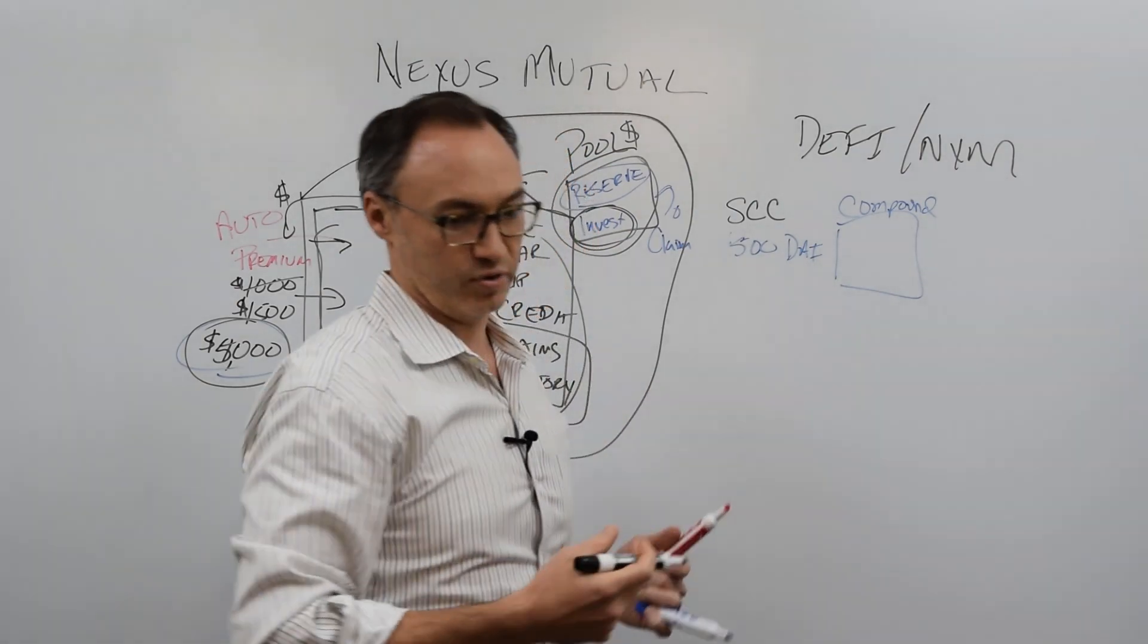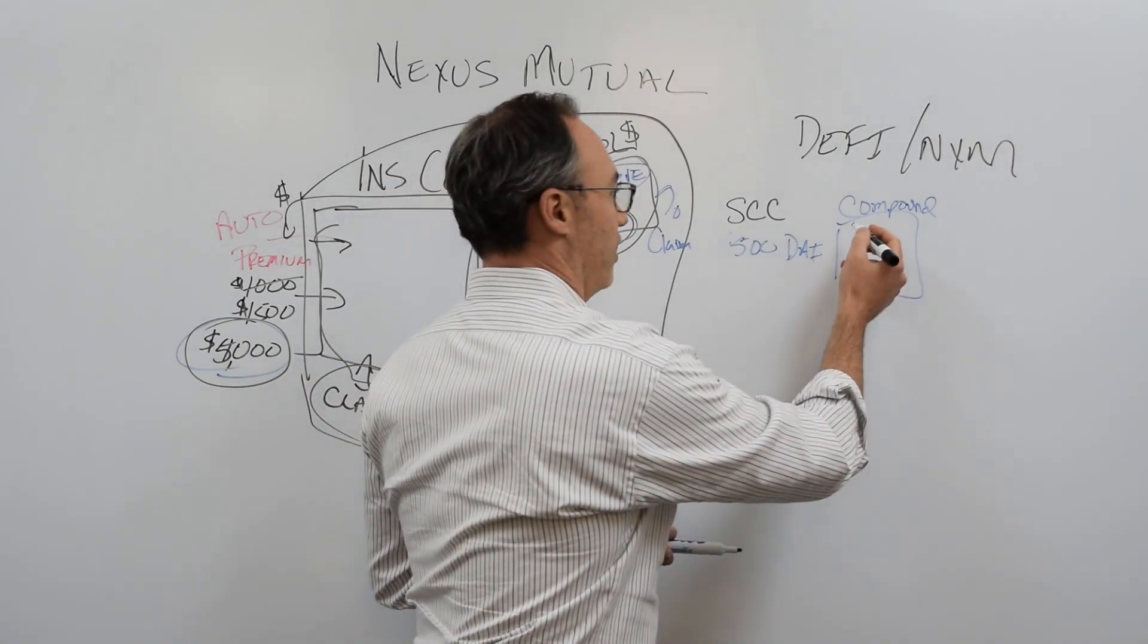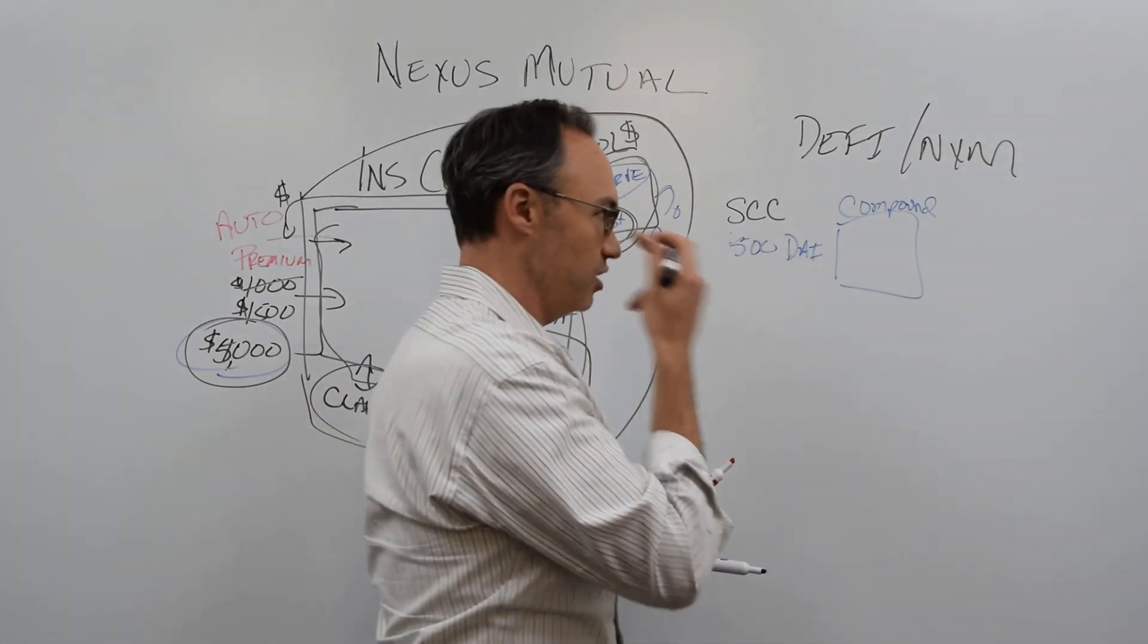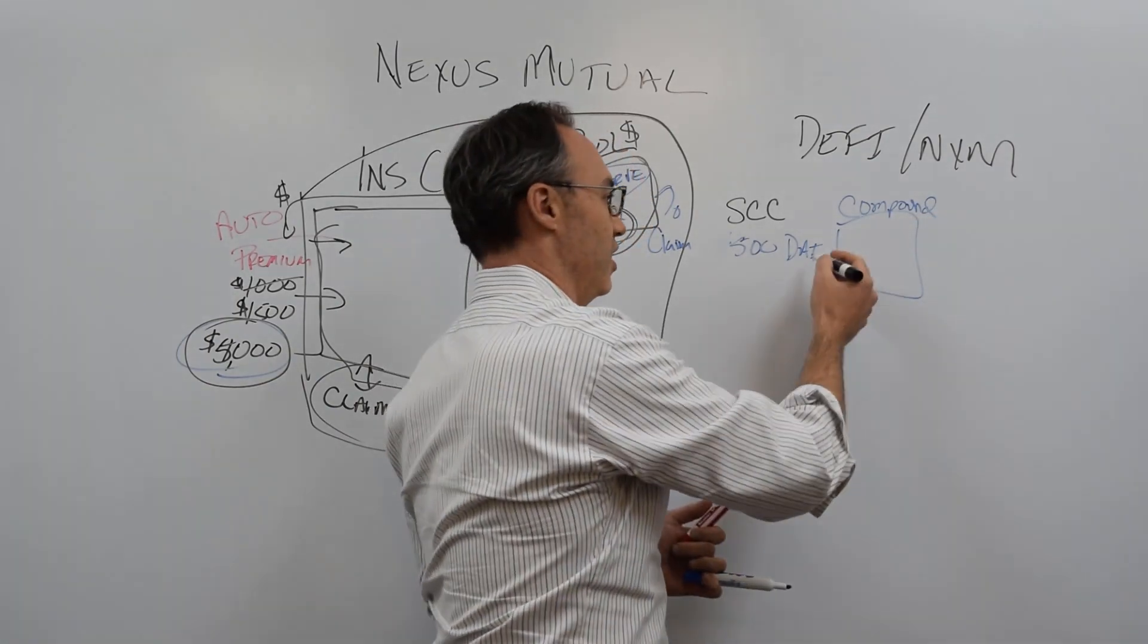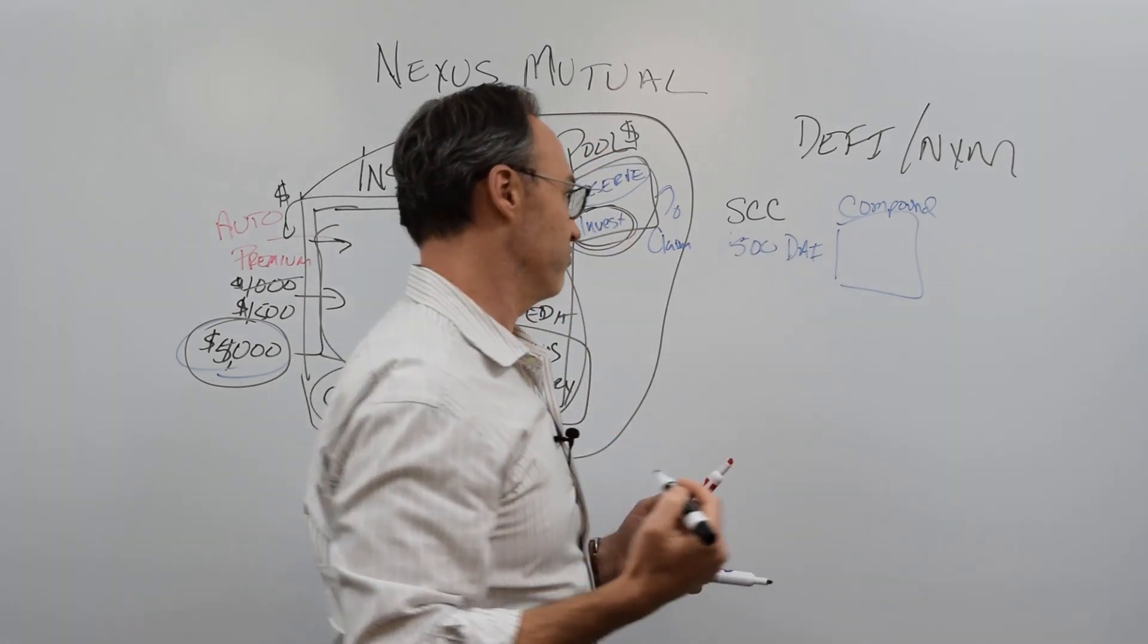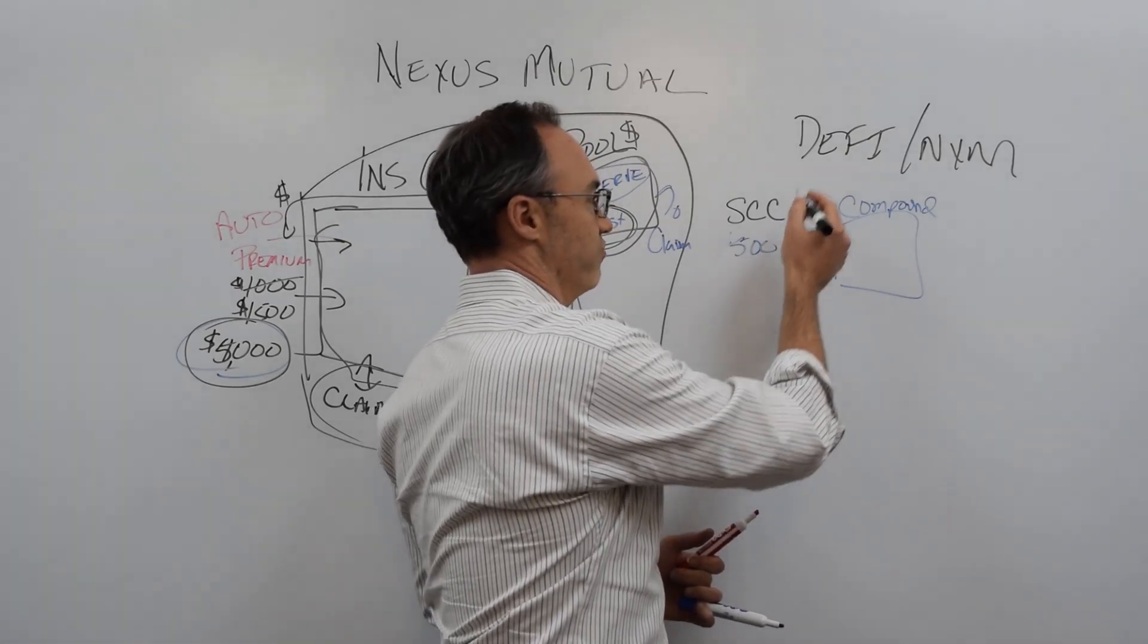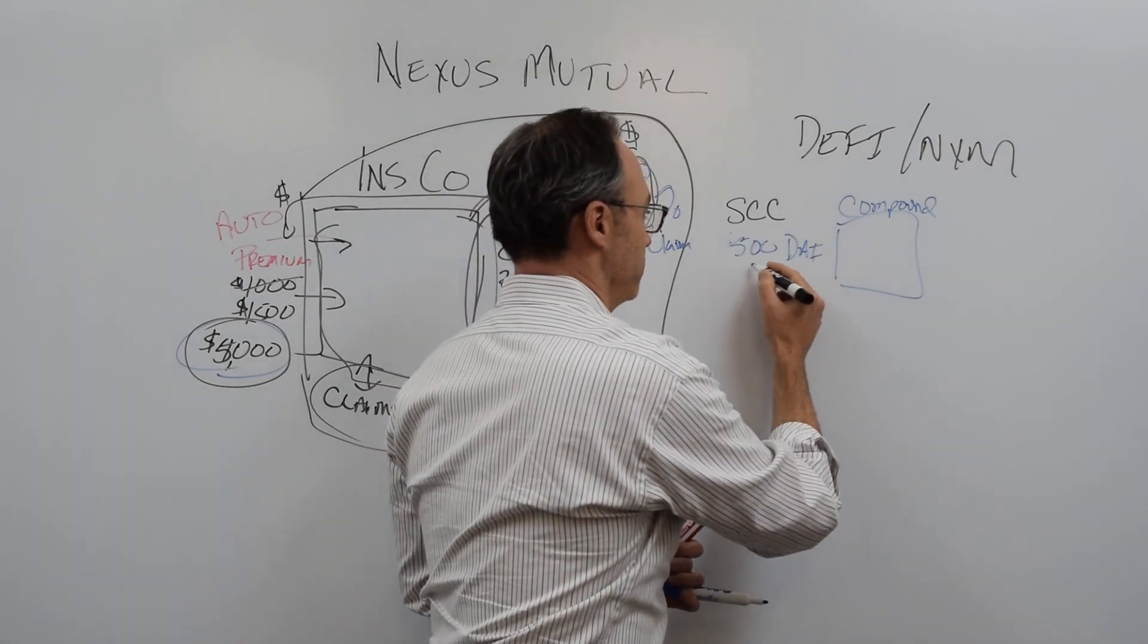Smart contract code can essentially have flaws in it. It could have faults. It could be hacked, whatever it might be. And I might want to insure that my 500 DAI that's in there earning me 6% or 7% is insured. So if someone were to hack this or find a flaw and be able to take my DAI out of this smart contract, I want to be made whole.